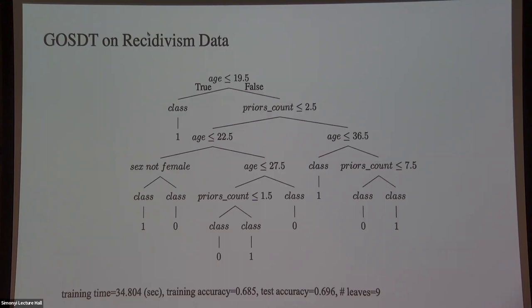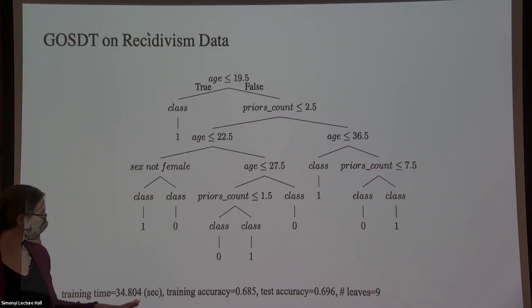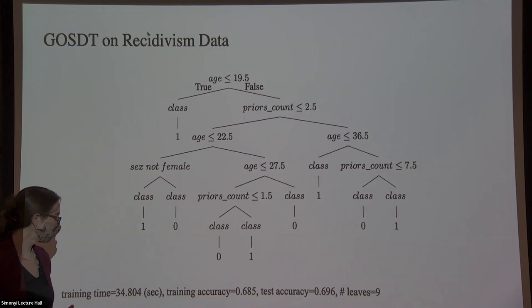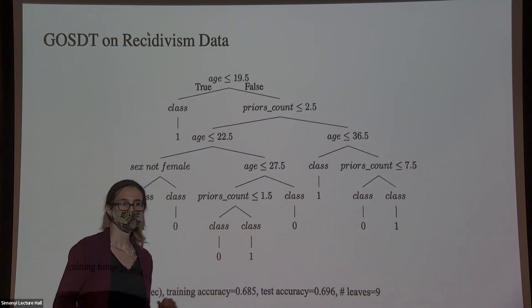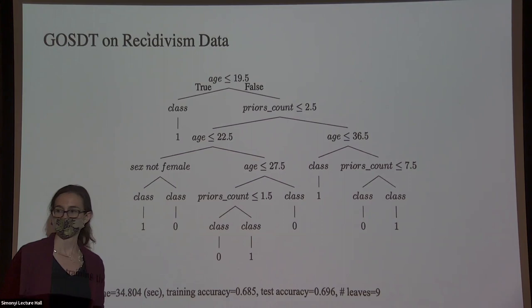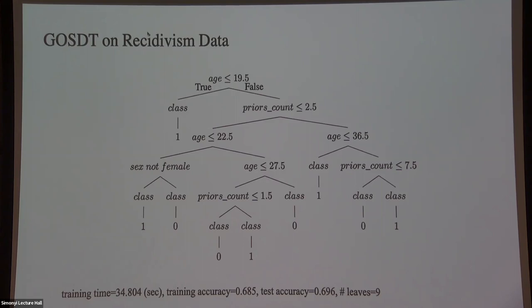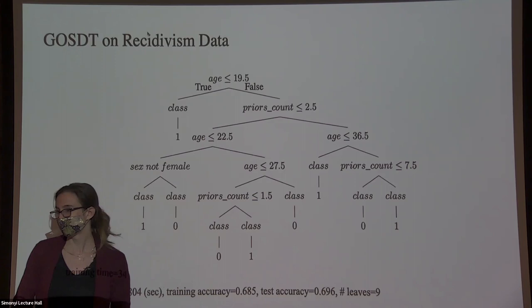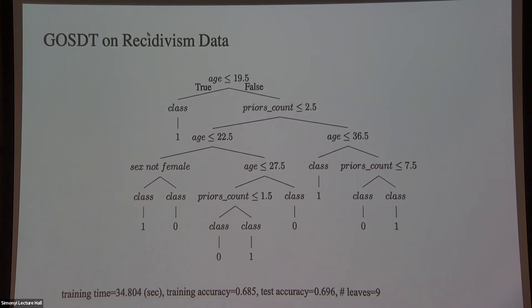The accuracy isn't incredibly high, but that's what you'd expect for this type of data — it's really hard to predict whether somebody is going to be arrested within a couple of years. One nice thing: the training accuracy and test accuracy are very similar to each other, even though the test people were never seen during training. That generalization is really good. The dataset uses five-fold cross validation — four folds for training, one for testing — with roughly seven thousand individuals.